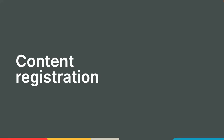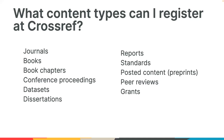Next, we're going to talk about the different ways you can register your content with us. There are a lot of different content types you can register. Many people know DOIs are used for journal articles, but we accept all the content types listed here, and each content type has a unique set of required metadata. About 75% of our content is journal articles, 15% is book content, and our newest content type is grants, which is still a small category but growing as funders are now able to join Crossref to register their grant metadata.